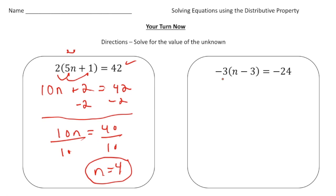Here we have a negative three times n minus three equals negative 24. So I'm going to distribute the negative three to the n. So that will give us a negative three n. And I'm going to distribute the negative three to the negative three inside the parentheses. So a negative times a negative gives us a positive nine. That's going to equal negative 24. Now I'm going to take away nine from both sides. So we have negative three n equals negative 33.